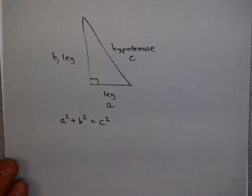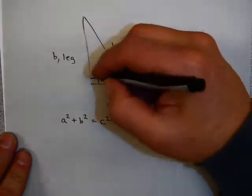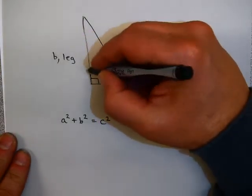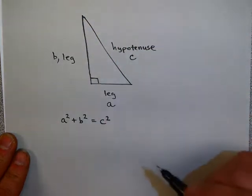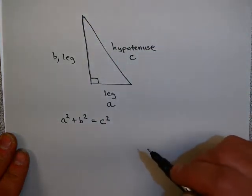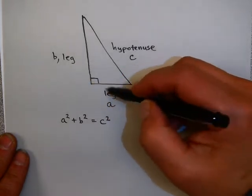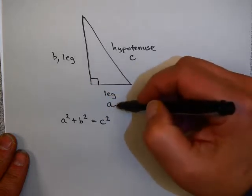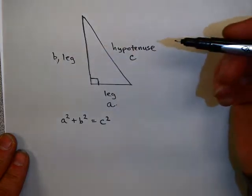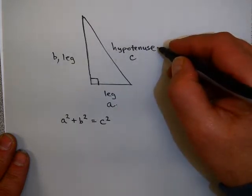All of these problems deal with what is known as the Pythagorean Theorem. The Pythagorean Theorem applies to a right triangle, which is a triangle with one right or 90 degree angle. In a right triangle, the two sides next to the 90 degree angle are called legs. So side A and side B are called legs.